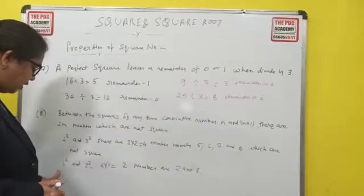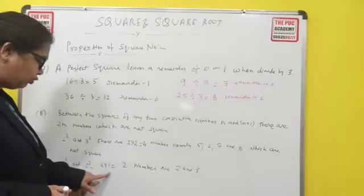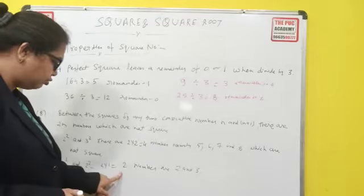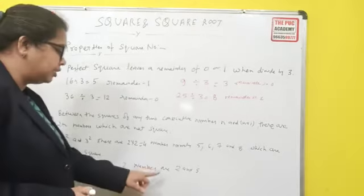Take another example. Between 1 squared and 2 squared, which is 2 times 1, that is 2 numbers. And the numbers are 2 and 3.